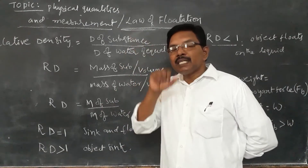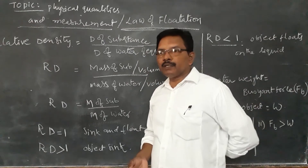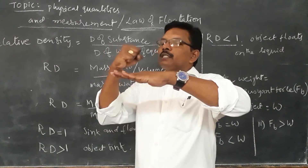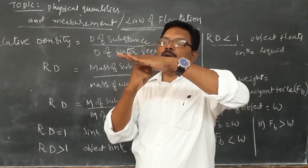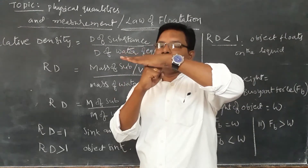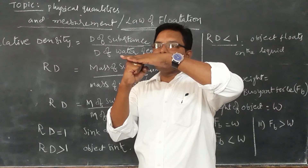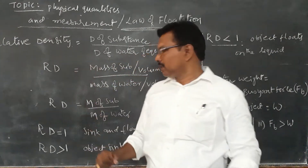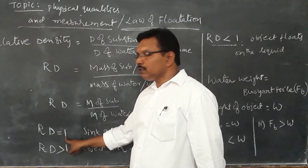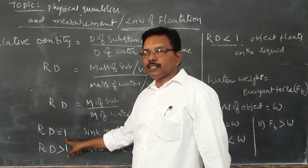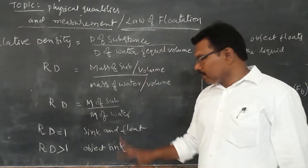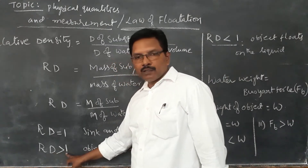When relative density equals one, the object goes just under the surface of the water — it neither completely sinks nor floats on top. This is called 'sink and float,' where the object stays just beneath the surface. This happens because both masses are equal.